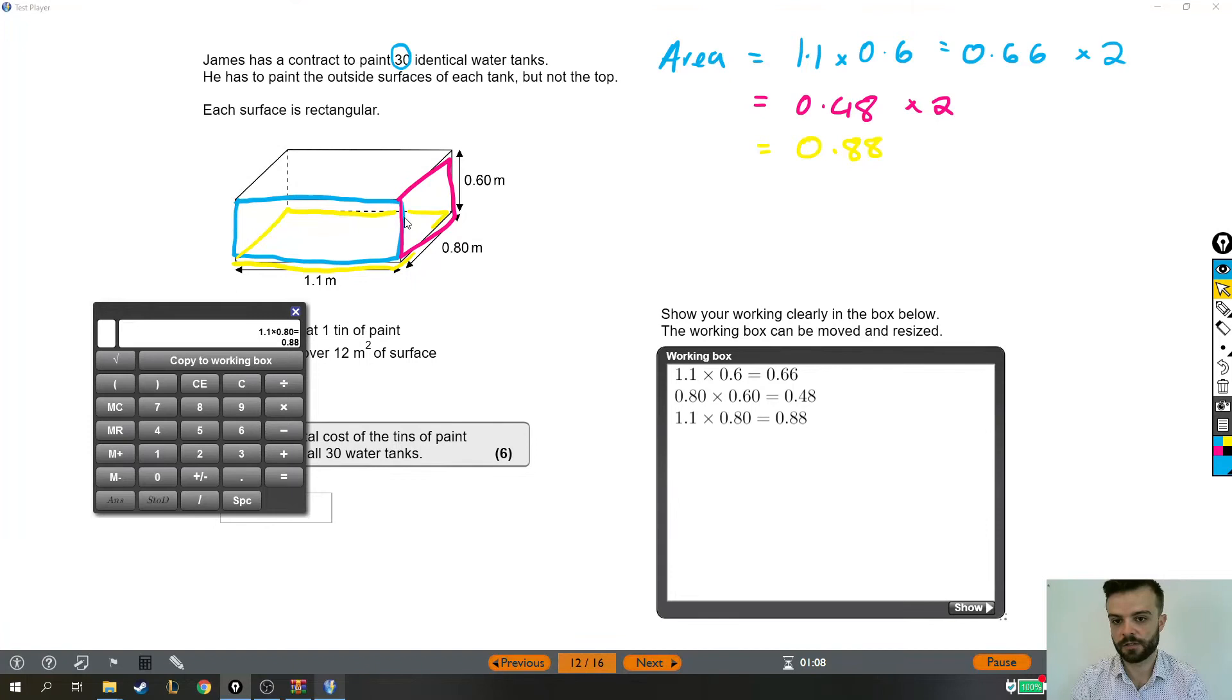So when I add up the total area that needs painting, I'm going to need two of the 0.66, two of the 0.48, but only one of the 0.88. So next step is to add those things together. We need 0.66 twice, so I'm going to add that one twice - that's the front and the back. We'll then do the left and the right, so that means including twice as well. And finally, we just need the bottom, 0.88. So this 3.16 meters squared is the area of one of those tanks that needs to be painted.